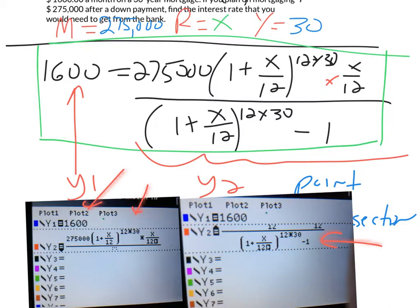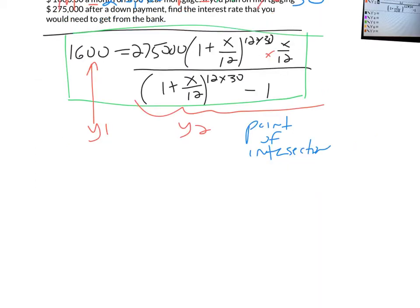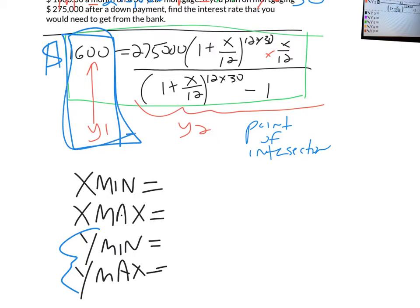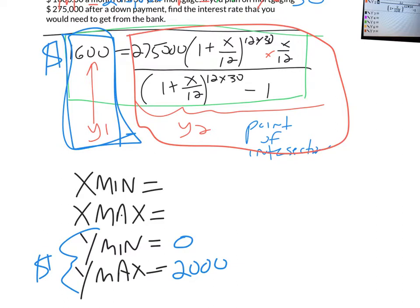Now, what I'm going to do is try to get the point of intersection of these two sides of the equation. And when you do these questions, they're all about getting the viewing window set up correctly. Now, I'm going to start off with my Ys. What do the Ys represent? Well, Y1 is $1,600. It's the money that you want to spend. So I'm going to let Ymin be 0 and Ymax be something bigger than $1,600. In this case, I'm going with $2,000, because Y represented the money.